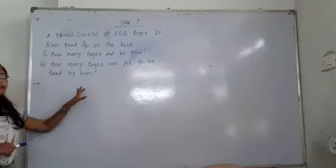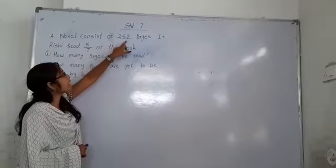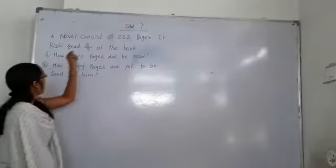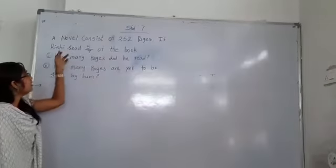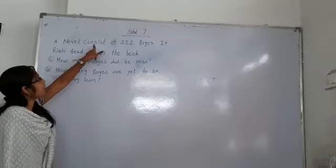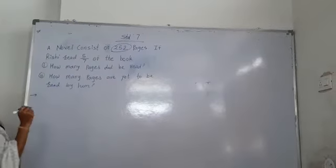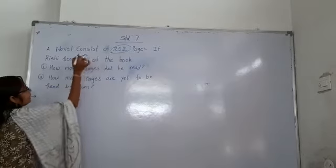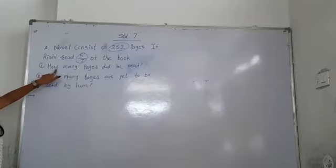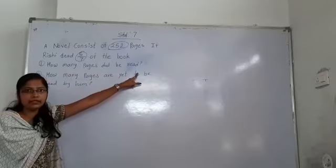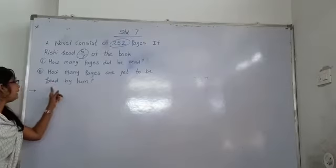In your page number 38 there is a word problem: a novel consists of 252 pages. If Rishi read 5 by 7 of the book, what do they ask? One novel book with 252 pages, and Rishi read 5 by 7 of the book. They ask some questions. First question: how many pages did he read? Second question: how many pages are yet to be read by him?